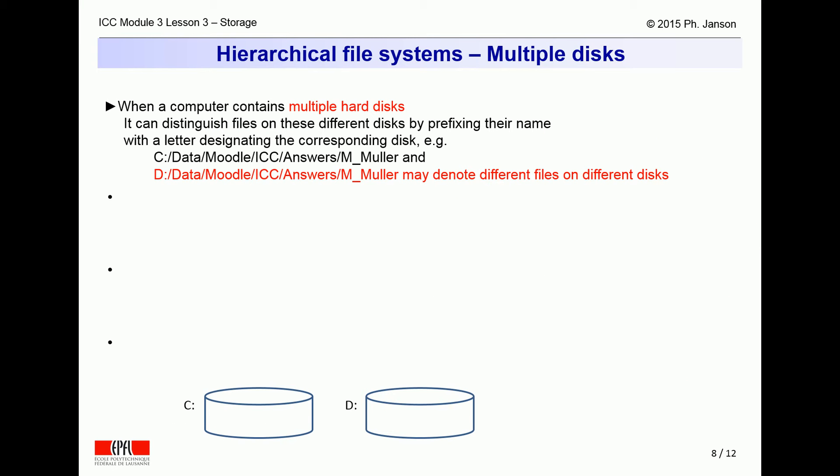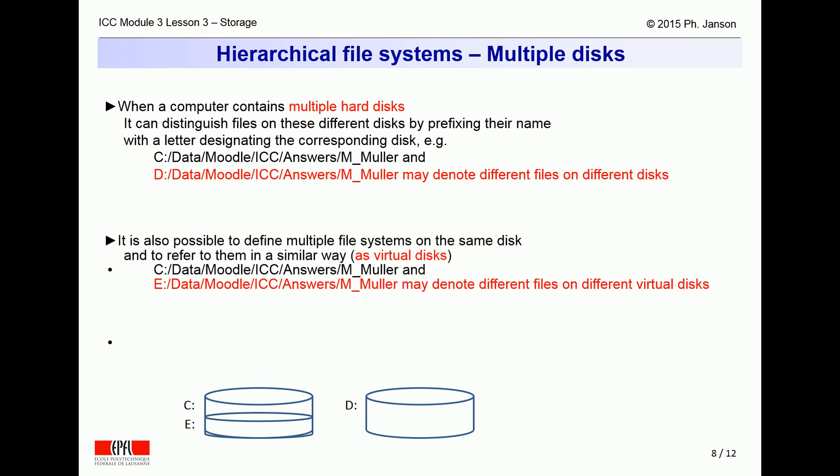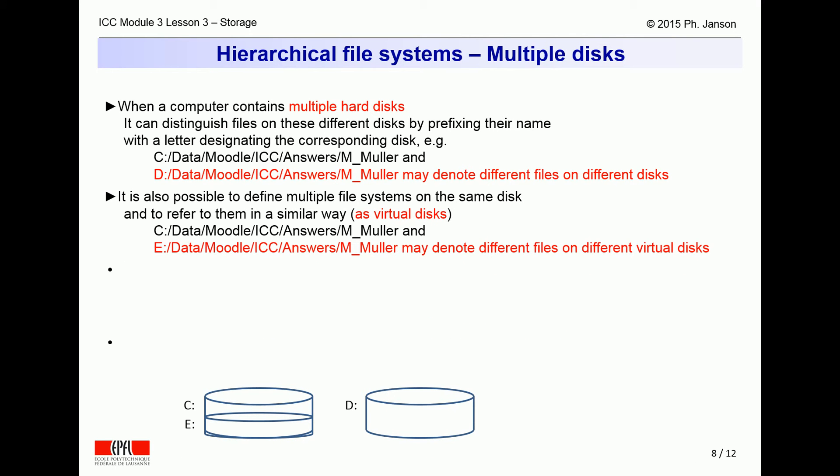So far, we explicitly imagined the file system as covering entirely one and only one hard disk. Extending this view, it is possible for a computer to manage multiple independent hierarchical file systems, each located on its own separate disk, where different disks and their associated file systems can be distinguished by a capital letter such as C or D. However, nothing says that one file system must correspond exactly to one hard disk. In fact, several separate file systems can be defined on a common hard disk, again distinguished by different file system letters such as C or E.